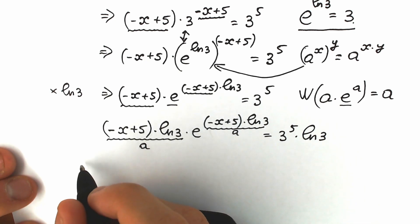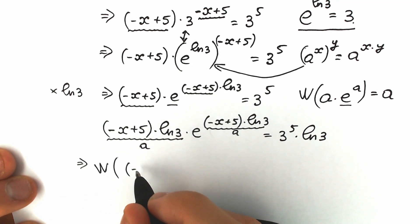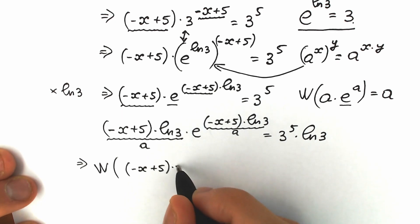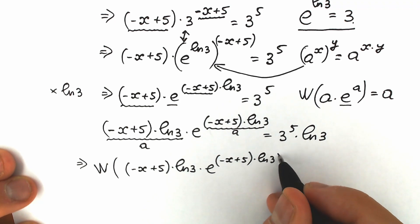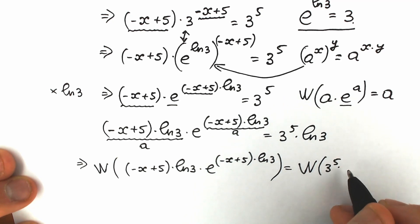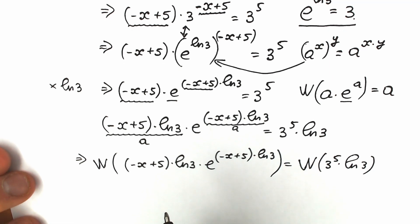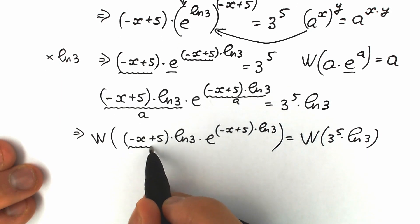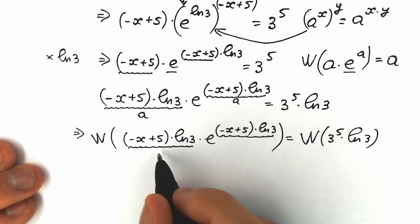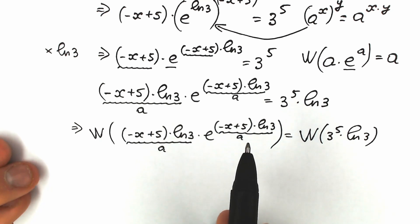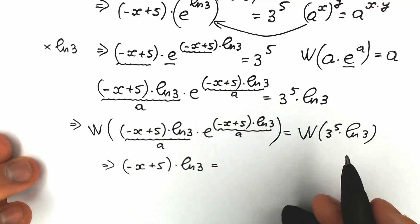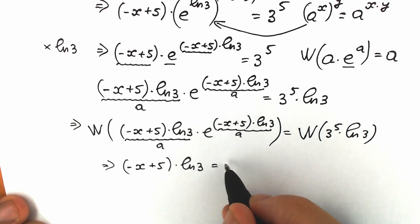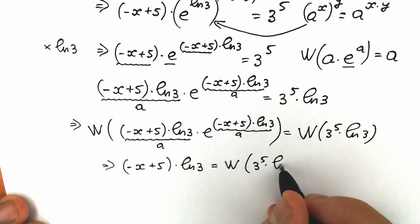Let's apply Lambert W function on both sides. We have Lambert W of minus x plus 5 times natural log 3 times e to the power of minus x plus 5 times natural log 3, equal to Lambert W of 3 to the power 5 times natural log 3. On the left side we have absolutely the same expression — this is our a, this is our a, absolutely the same — and we have e. So as a result we have only a on the left side, where a in our case is minus x plus 5 times natural log 3 equal to Lambert W of 3 to the power 5 times natural log 3. This is a constant, so it's an absolutely great result.